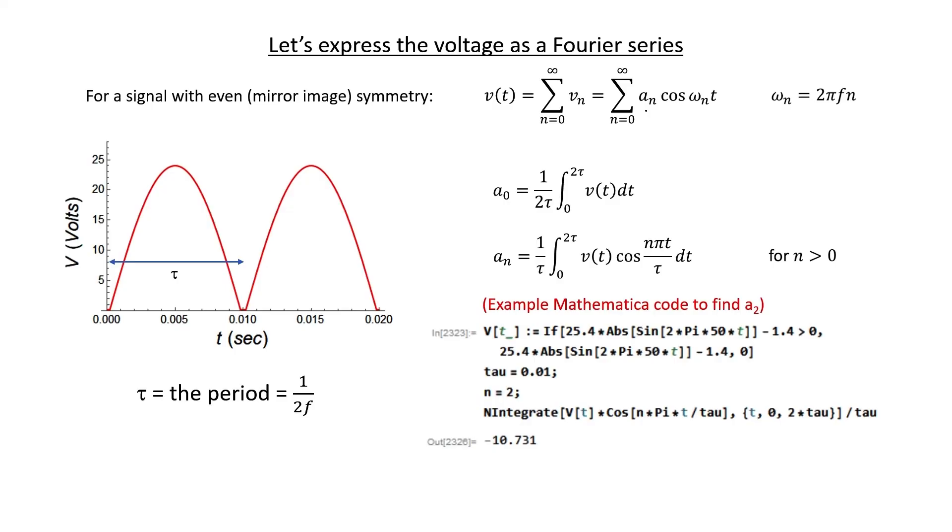For example, this is what the Mathematica code looks like if you wanted to calculate a sub 2. To summarize, over here on the left, we have a plot of v sub t. That can be expressed as an infinite series. We have a formula for calculating a sub n.